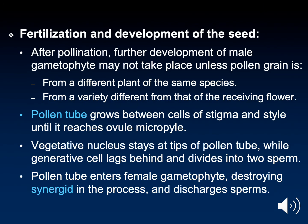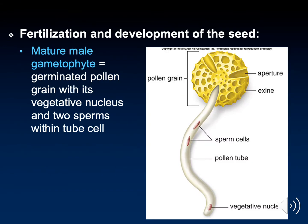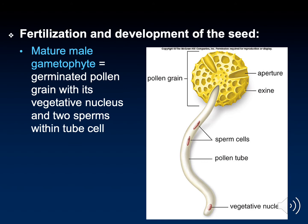It's after pollination when the tube cell starts to do its work. It develops a long pollen tube and the generative cell begins to develop two sperm. The pollen tube is a long tube structure which extends through the stigma, through the style, eventually reaching the ovule. Here is a picture demonstrating a pollen grain with a long pollen tube. You can see inside the pollen tube that there is a vegetative nucleus from which the two sperm cells arose.